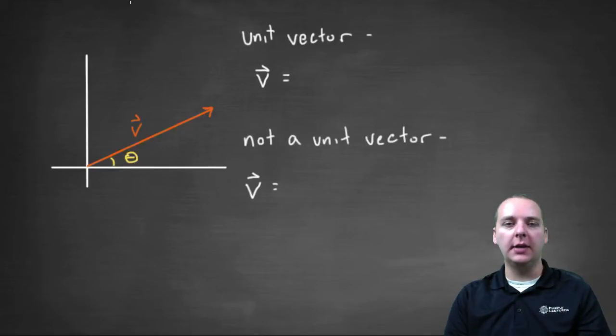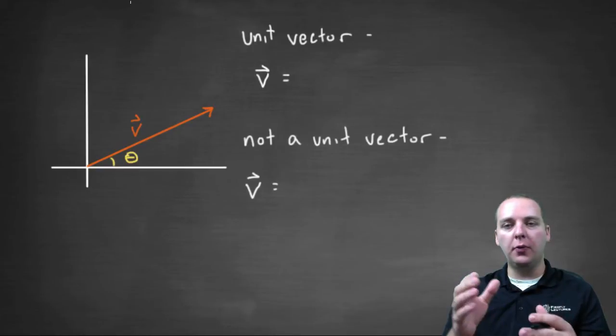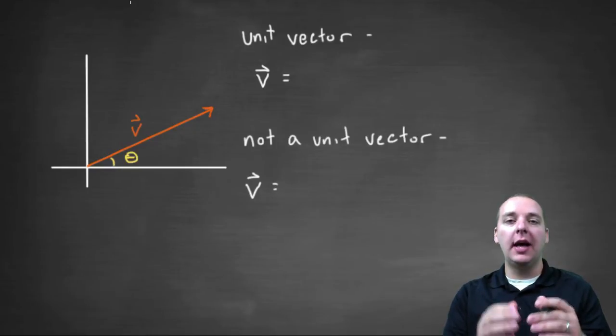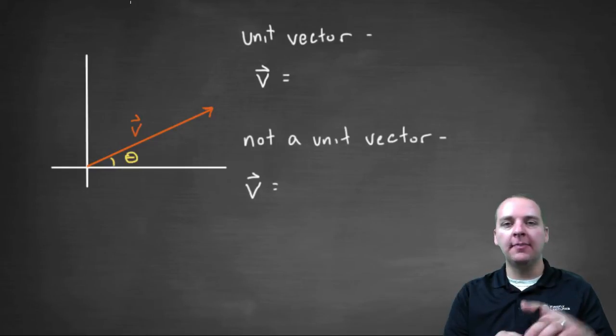Especially in a lot of real-life applications, vectors are often described instead of in component form or with an i-th component or a j-th component or something like that; they're described in terms of how long the vector is and what angle it makes with the positive x-axis.